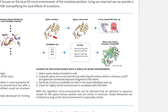Ascona searches for similar microenvironments in the candidates by first matching the query sequence fragments with the candidate sequences, and then optimizing this matching with a geometric score to identify similar 3D arrangements. With this algorithm, structures can be retrieved that contain microenvironments that are identical in sequence except for the query residue position, and are also similar in structure. Global deviations are not relevant as long as the local microenvironment is reasonably similar.